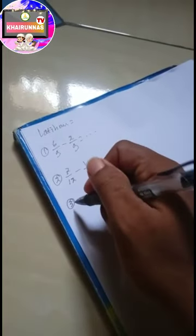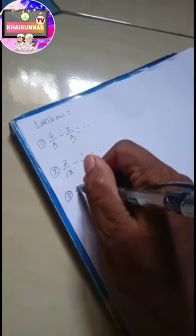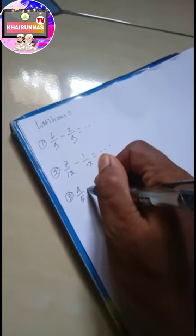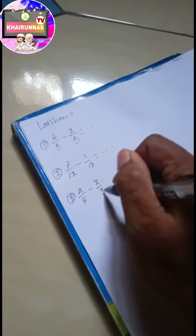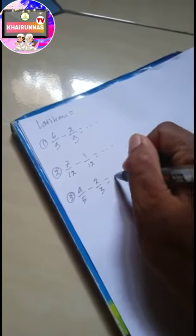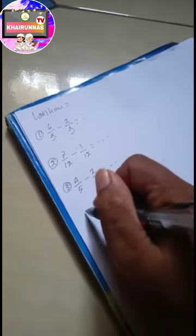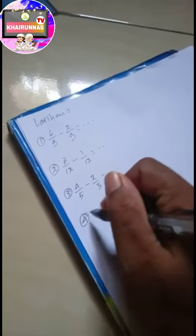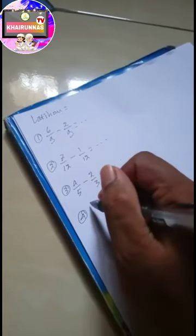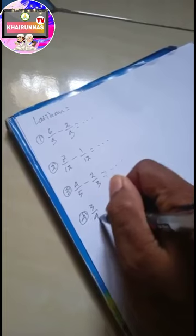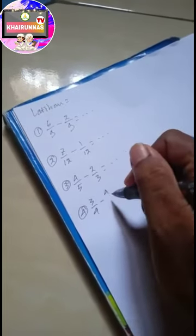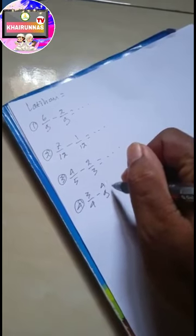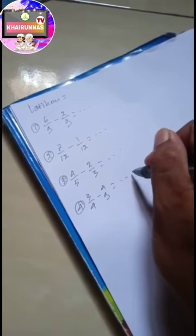Nomor 3: 4 per 5 dikurangi 2 per 3 sama dengan titik-titik. Nomor 4: 3 per 4 dikurangi 4 per 9 sama dengan titik-titik.